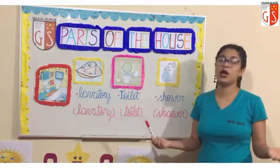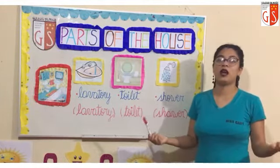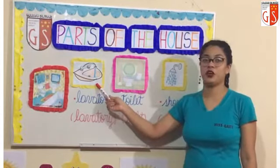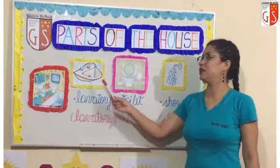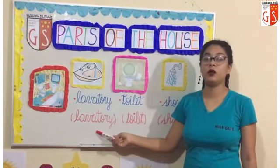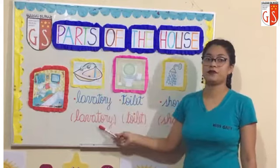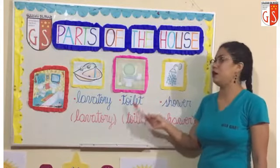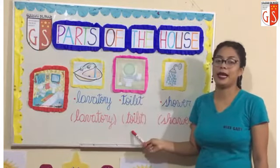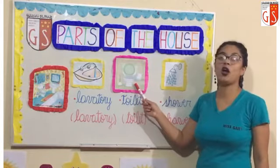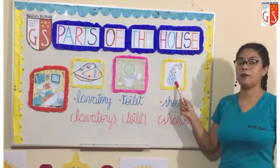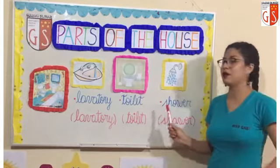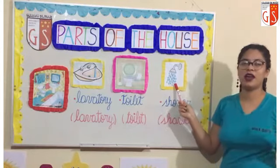Now we are going to practice the pronunciation. Ahora vamos a practicar la pronunciación. Come on, let's start. Lavatorio. Lavatory. Lavatorio. Lavatory. One more time: lavatorio en inglés es lavatory. Next. Inodoro. Toilet. Inodoro. Toilet. The last one — toilet. And finally, ducha, shower. Ducha, shower. The last one. Shower. Very, very good.